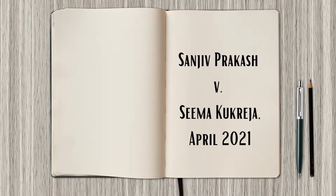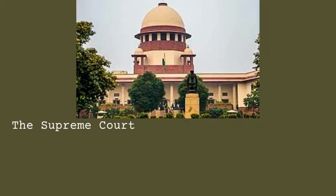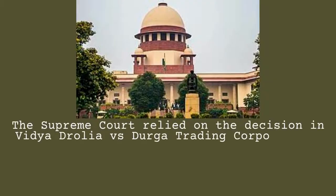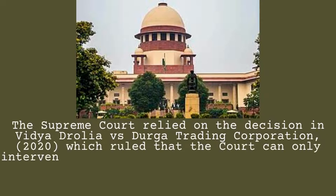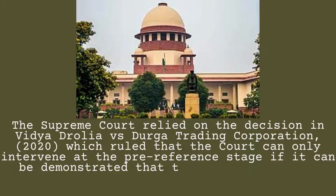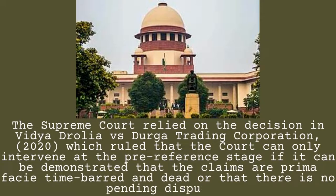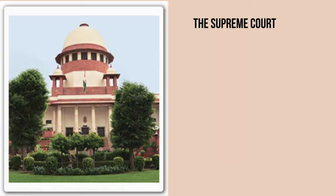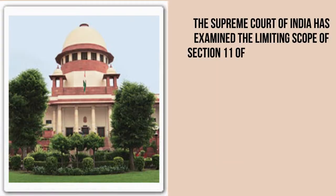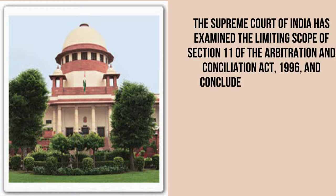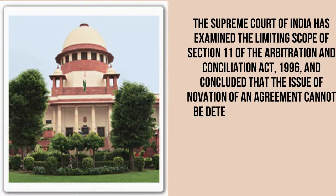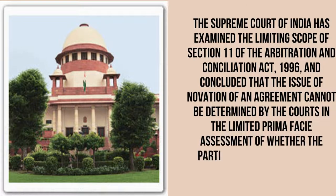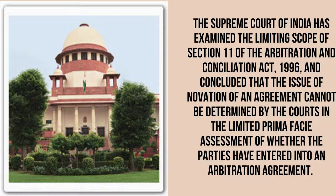In Sanjeev Prakash v. Seema Kukreja (April 2021), the Supreme Court relied on the decision in Vidya Drolia v. Durga Trading Corporation (2020), which ruled that courts can only intervene at the pre-reference stage if claims are prima facie time-barred or there is no pending dispute; all other cases should be sent to an arbitral tribunal for a merit ruling. The Supreme Court examined the limiting scope of Section 11 of the Arbitration and Conciliation Act 1996 and concluded that the issue of novation of an agreement cannot be determined by courts in the limited prima facie assessment.